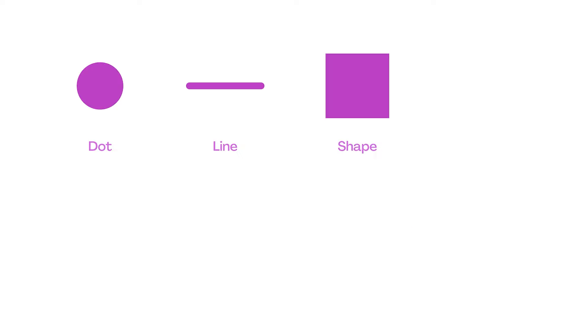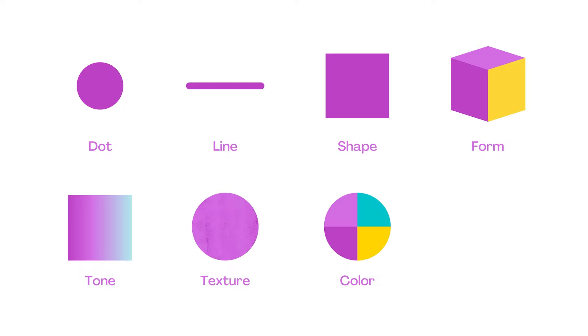We're going to explore how a dot, line, shape, form, tone, texture, color, and text are the basic building blocks of art and design. Understand these elements and you'll understand how art and design are fundamentally made.